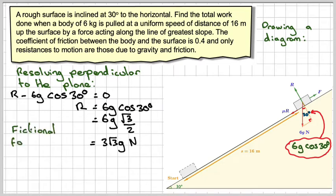The frictional force is going to be f equals mu r. Well mu is 0.4 from the question. So that will be 0.4 times 3 root 3g which gives me a friction force of 1.2 root 3g newtons. We'll leave it like that because we're going to need that.